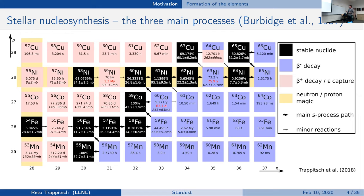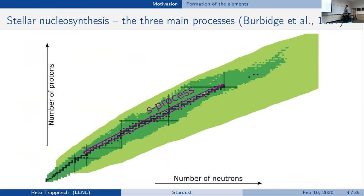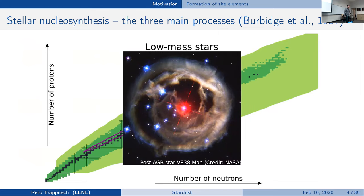The S-process explains about half of the elements in that region. One of the very important producers for the S-process, especially for higher mass elements, are low-mass stars — low-mass asymptotic giant branch stars.